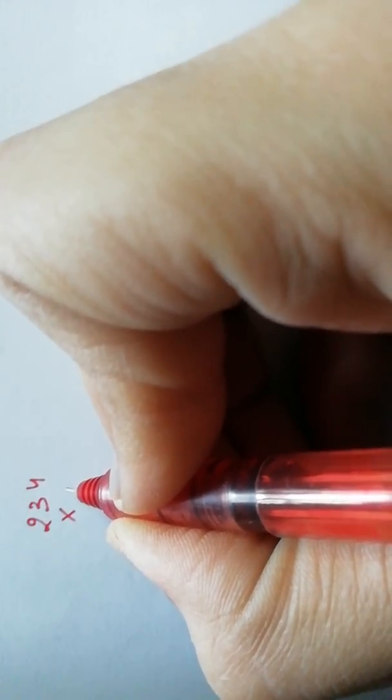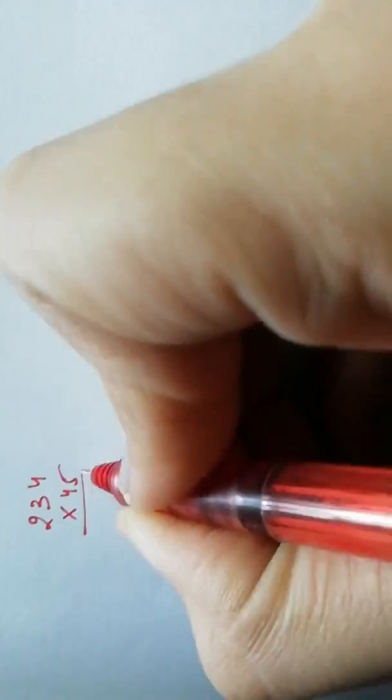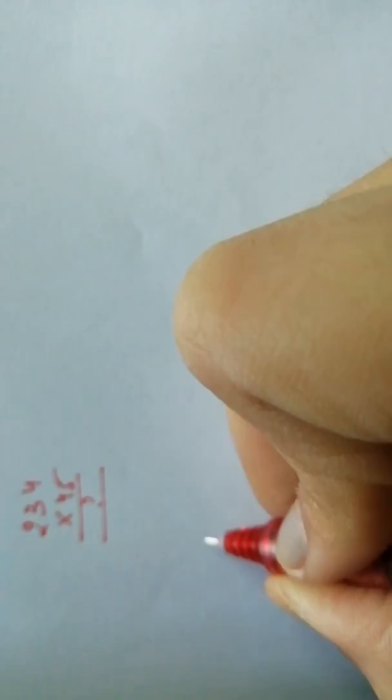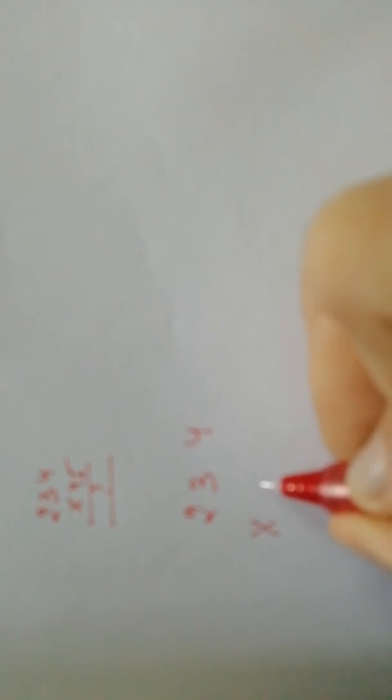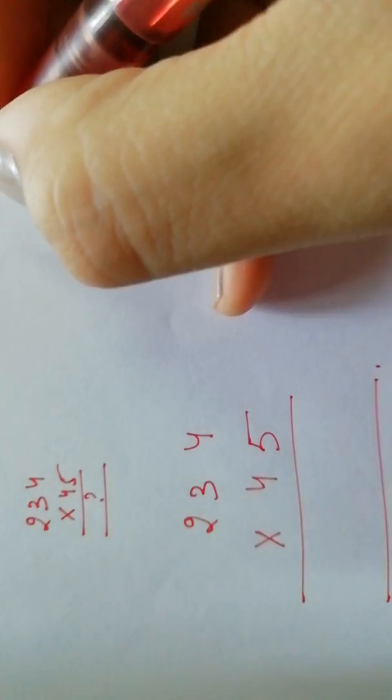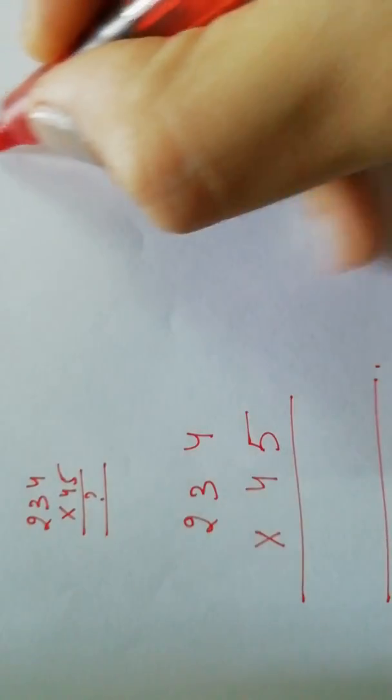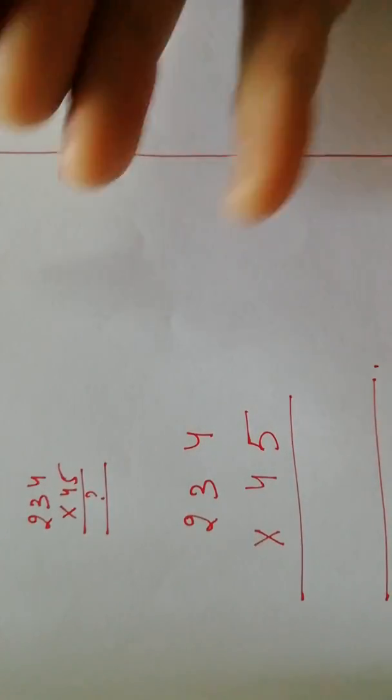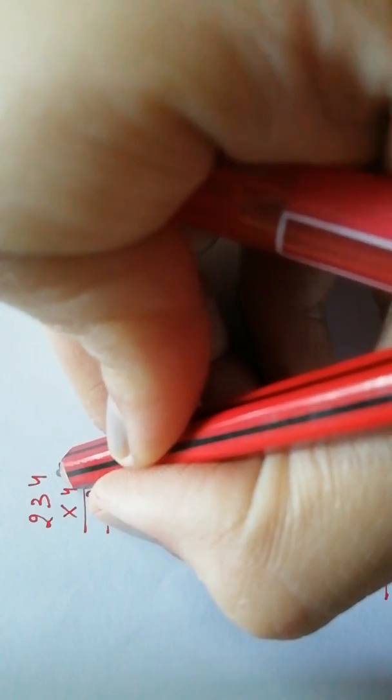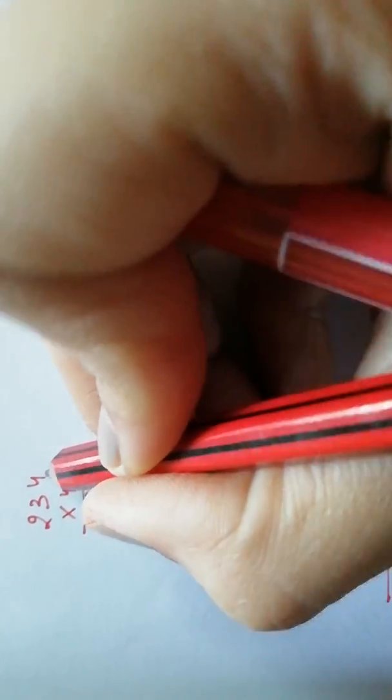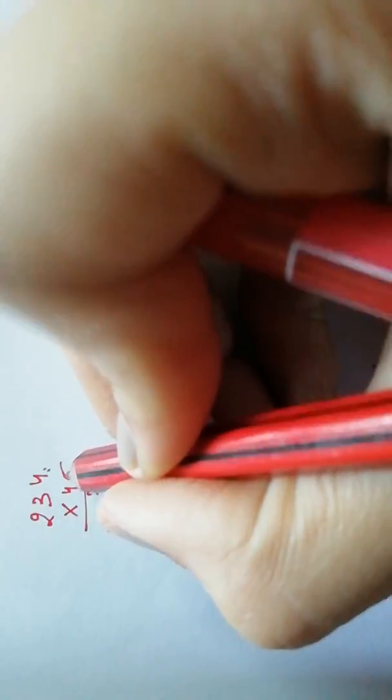So what will be the result? Write the number here again: 234 multiplying it with 4 and 5. Step 1 is to multiply the units digits of both the numbers. In this case it is 5 and 4, so we multiply 5 and 4.